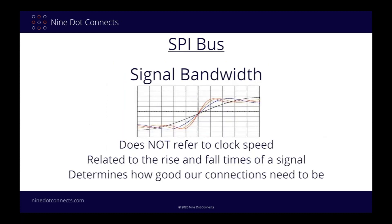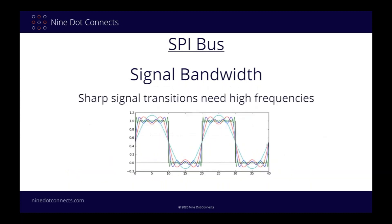The signal integrity is affected by the edge transitions or slew rate of the signals, not the actual clock speed. Since clock speeds for SPI buses are typically in the 10 to 50 MHz range, you won't need fast edge transitions to meet timing, so you can use slower slew rates and still meet your timing requirements. But be warned that some devices may not give you a choice and will still have high slew rates, even at relatively slow clock speeds. So don't just assume running at 10 MHz means that you will not have signal integrity issues.